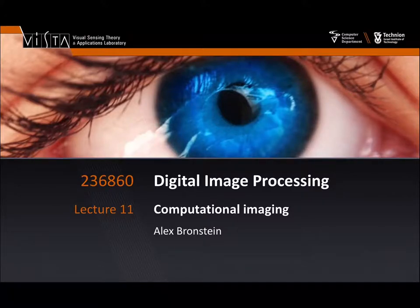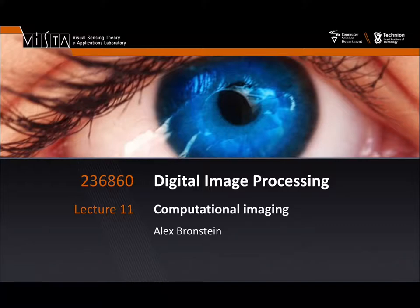We have talked about digital image processing the majority of the time in this class. We talked about going from the analog domain to the digital domain when we discussed sampling in the previous lecture, about generalized form of sampling and sensing. Today I would like to show you how to use all these theoretical and computational tools to revisit the imaging process — specifically, a huge and fast-developing field called computational imaging or computational photography.